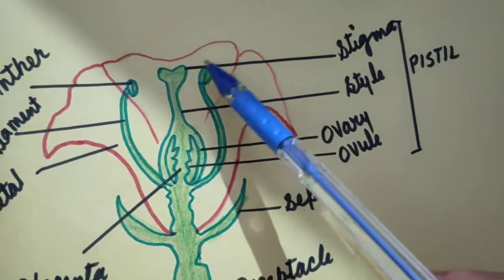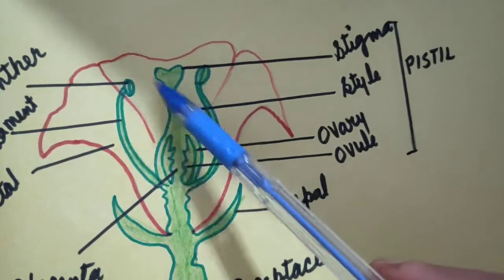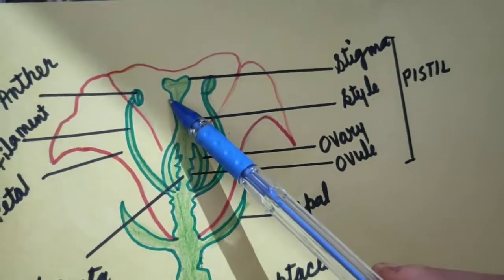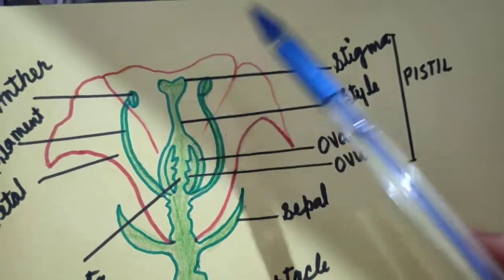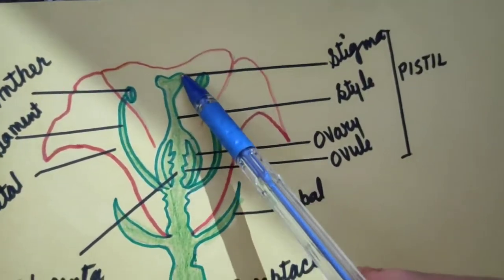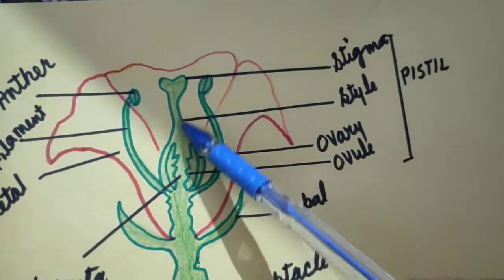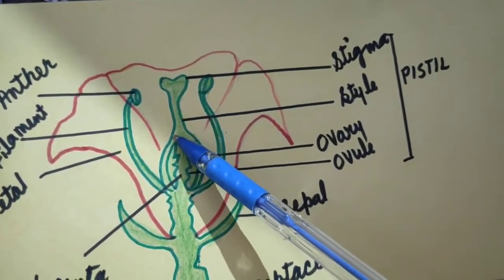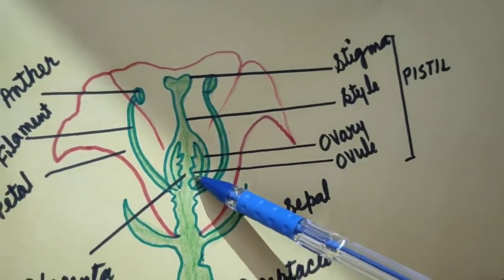And what is the role of stigma in flower? It serves as the landing place for pollen during pollination. Means pollen grains fall on stigma. Style. Style is a long, slender, tube-like structure, and it connects the stigma to the ovary.